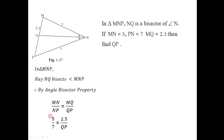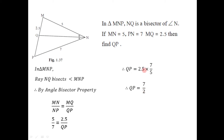Taking QP to the left-hand side, we get QP equals 2.5 on the right-hand side. Taking 5 by 7 to the right-hand side gives its reciprocal, 7 by 5. Simplifying, 2.5 divided by 5 gives one-half, so QP equals 7 divided by 2, which is 3.5. So the length of segment QP is 3.5.